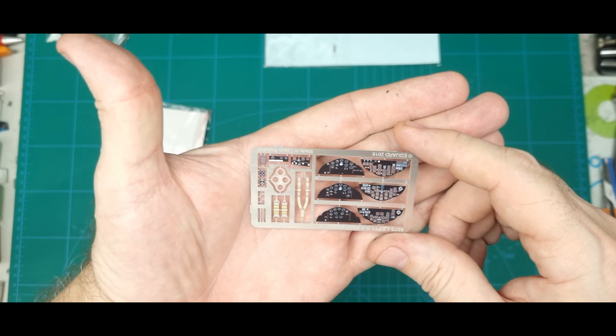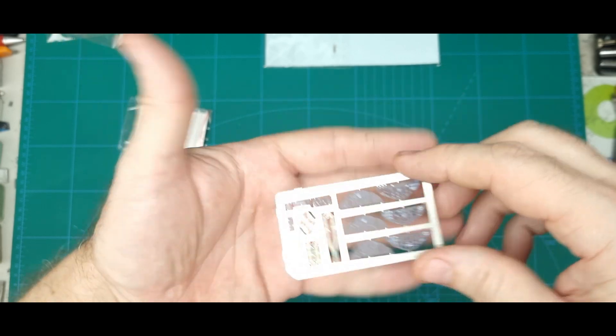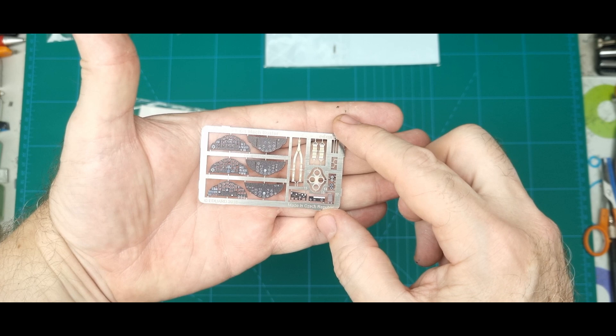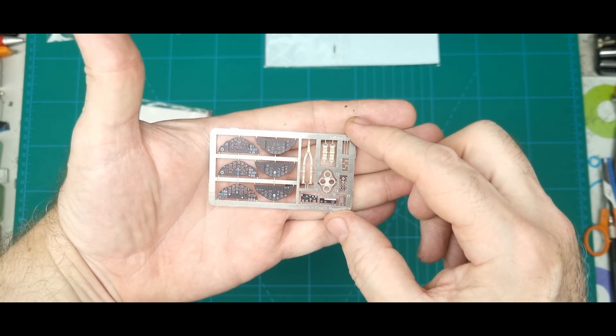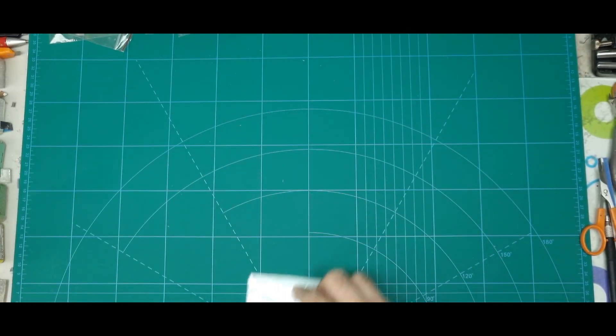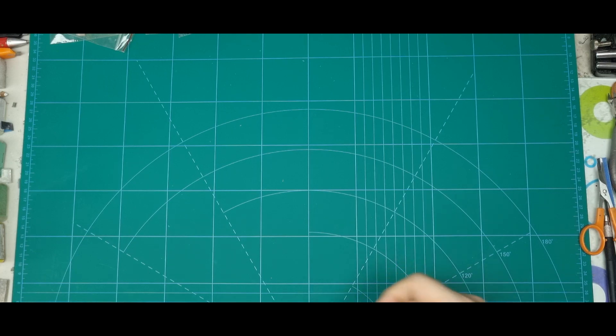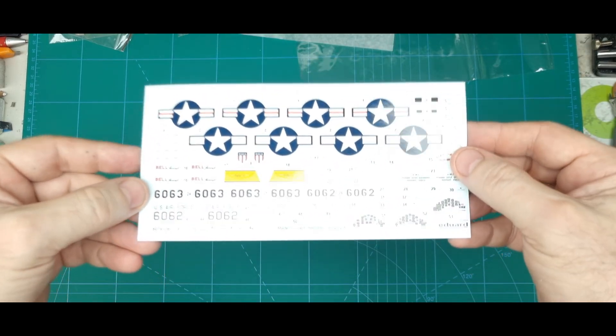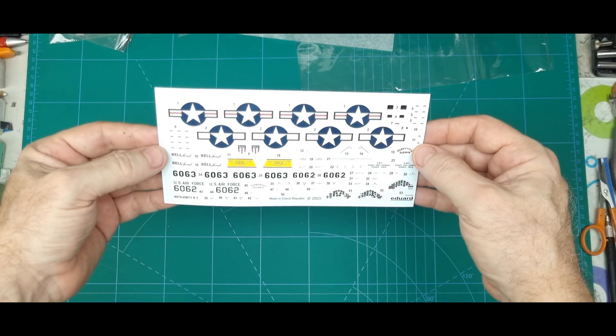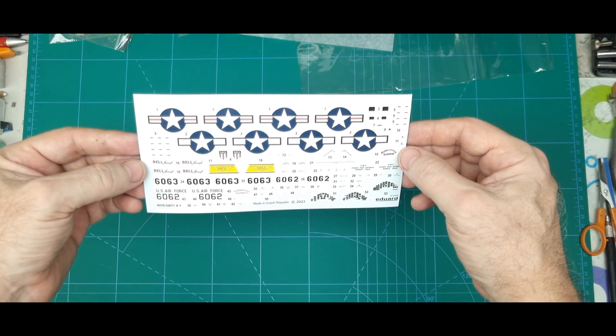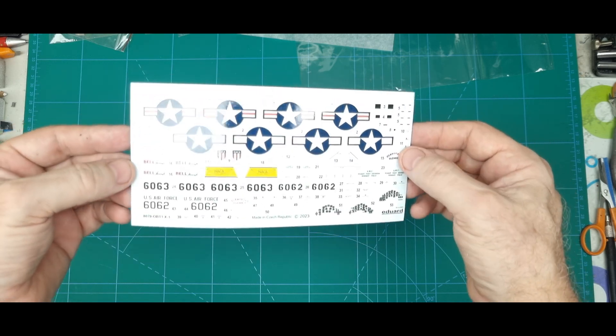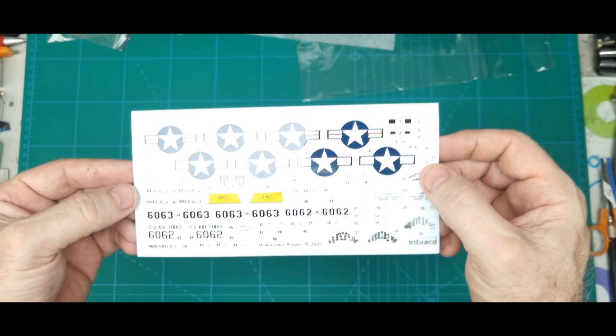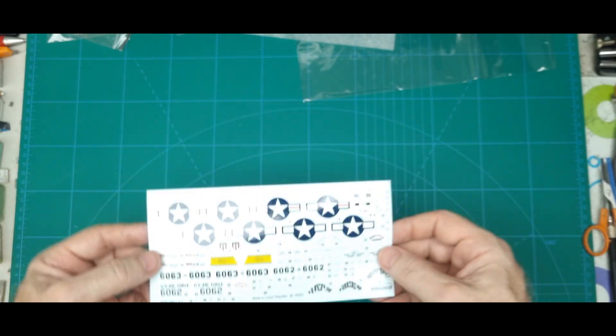So I've got three instrument panels there depending on which one you're doing. Now the engine rear and harnesses. Very nice. Decals. I'll take still photos that you can see better, but they all look good. And so there are the options for the instrument panel and decals. Not that you would use them.